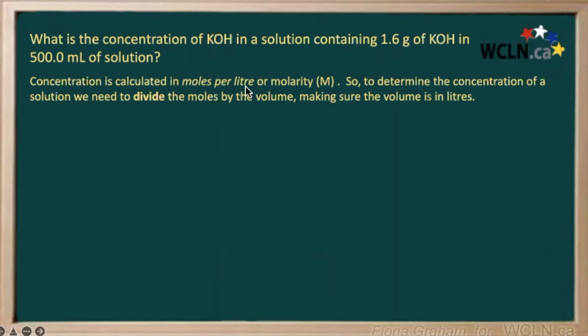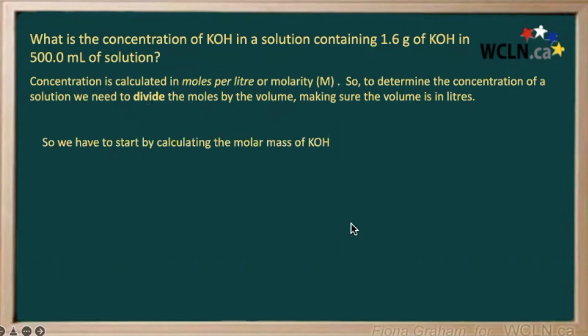To do this calculation, we're going to look at the number of grams we have and first convert that to moles. Then we'll divide that number of moles by our volume. So we need to start by calculating the molar mass of our potassium hydroxide.